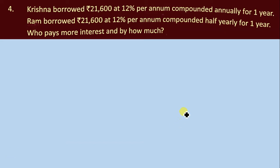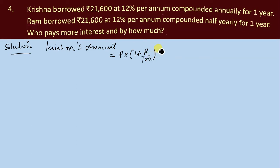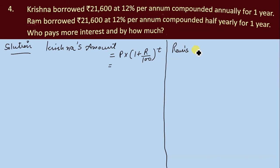To solve this, we will calculate the amount for Krishna compounded annually and the amount for Ram compounded half-yearly. For Krishna's amount, the formula is P into (1 + R/100) raised to the power T.